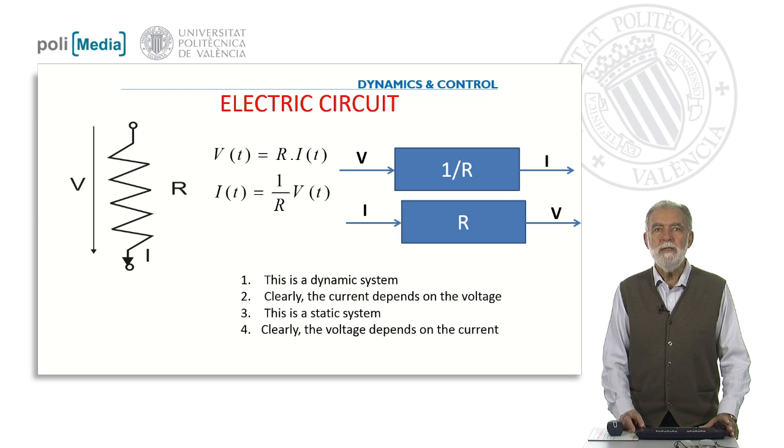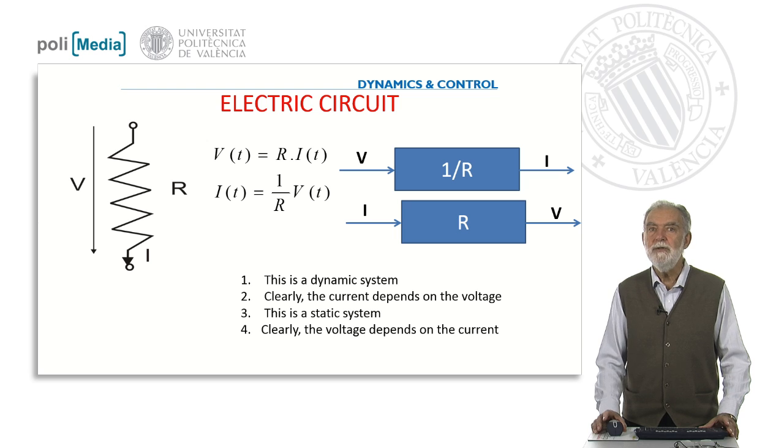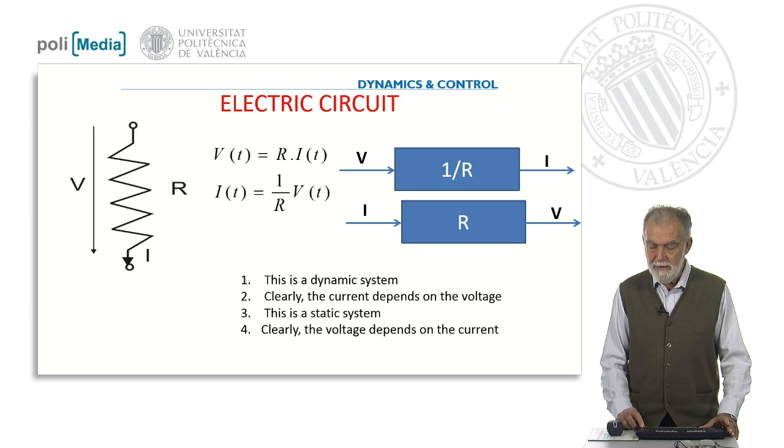The first question we saw was this electric circuit composed by a resistor. We realized that this is a static system because the relationship between the current and the voltage is instantaneous. It doesn't depend on the past and can be reversible as we saw in the first question.